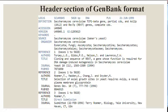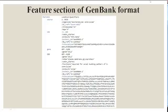So the header section gives a brief introduction covering the organism, the authors, the title of the paper, the accession number, and what kind of information is stored. If it is a protein sequence, instead of base pairs it will write 'AA' (amino acid), and instead of DNA it will write 'protein.' Next comes the feature section.